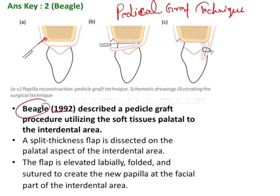First, you have to give an incision on the palatal aspect. Then you will have to raise a split-thickness graft. Why split-thickness? So that later there will be some connective tissue remaining. This connective tissue will have a lot of mesenchymal cells, a lot of capillaries and blood supply, and undifferentiated cells that can give rise to further connective tissue as well as epithelium. This tissue will regenerate over a period of time.